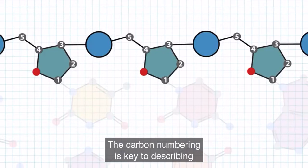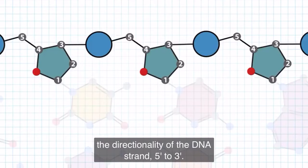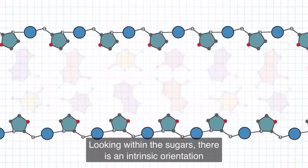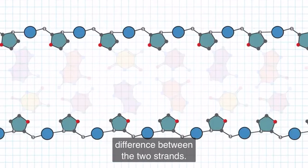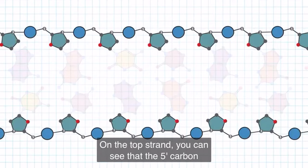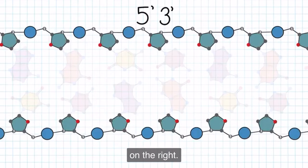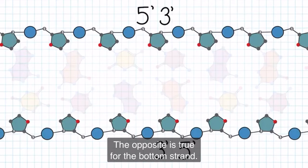The carbon numbering is key to describing the directionality of the DNA strand, 5' to 3'. Looking within the sugars, there is an intrinsic orientation difference between the two strands. On the top strand, you can see that the 5' carbon of each sugar is on the left and the 3' carbon is on the right. The opposite is true for the bottom strand.